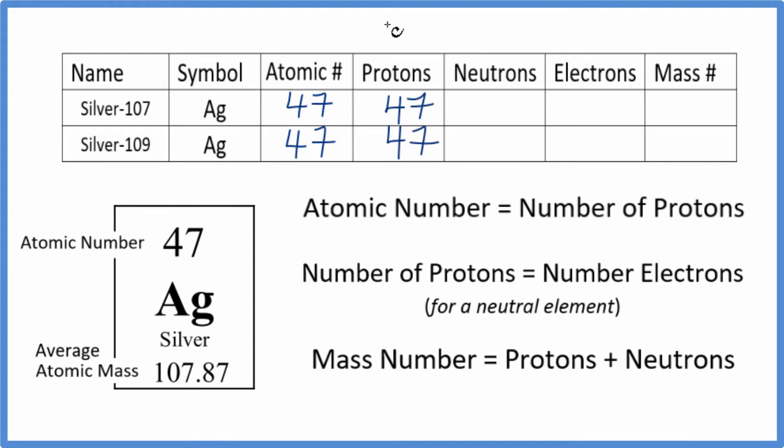We'll skip the neutrons for now and go back to that in a moment. For electrons, on the periodic table, all of the elements are neutral. They don't have a negative or a positive sign after them. They're neutral.